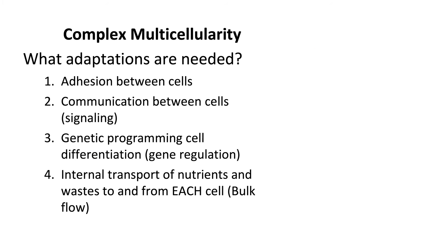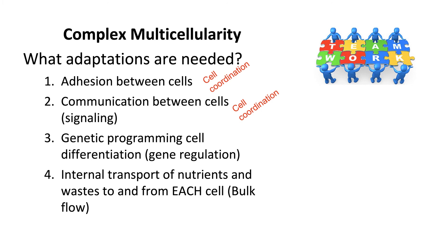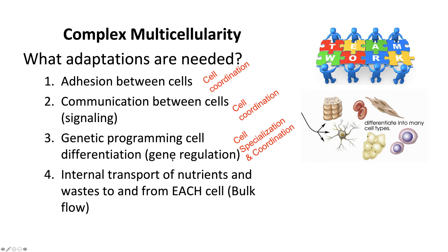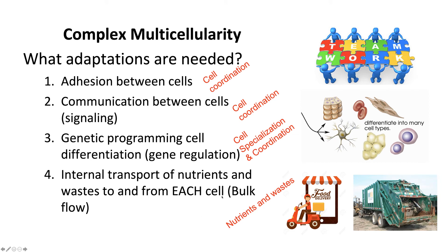To recap the adaptations needed for complex multicellularity: number one, adhesion between cells; number two, communication between cells; number three, genetic programming for cell differentiation through gene regulation; and lastly, internal transport of nutrients and waste through bulk flow. The first two adaptations aid in cell coordination. Gene regulation aids in cell specialization and also coordinates cell placement during development for the formation of tissues and organs. Internal transport systems aid in bulk flow of nutrients and wastes to every single cell.